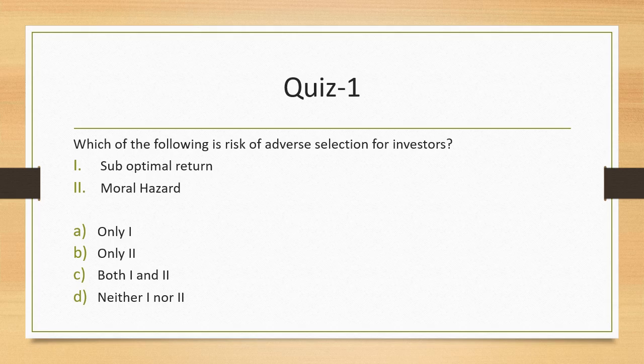Question 1: Which of the following is the risk of adverse selection for investors? Investors who invest in alternative investment funds potentially have the risk of adverse selection. Two reasons have been mentioned: suboptimal return and moral hazard. Both are covered under adverse selection. So adverse selection can arise for investors from suboptimal return as well as moral hazard.